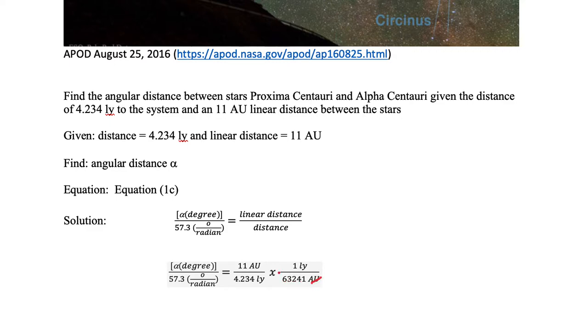Therefore, I can cancel AU and I can cancel light year. Now that my letters have canceled, I can solve numerically the right-hand side. We need to take 11 times 1, divide that by 4.234, and then divide that by 63241. So let's go ahead and do that.